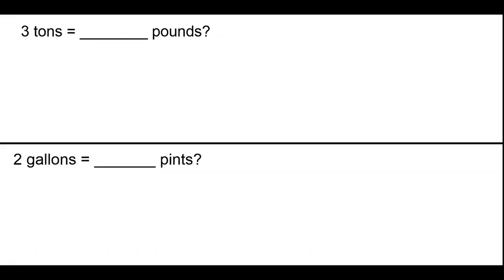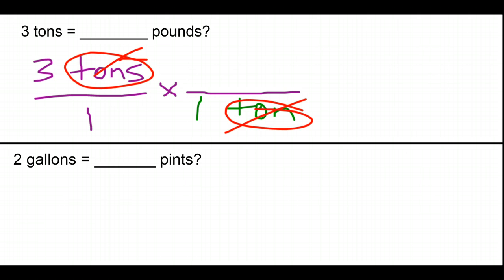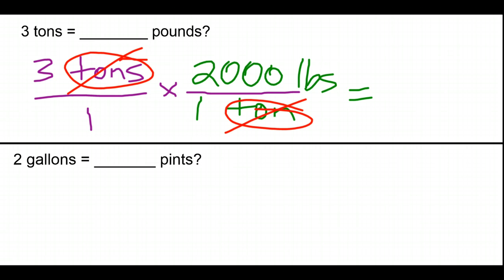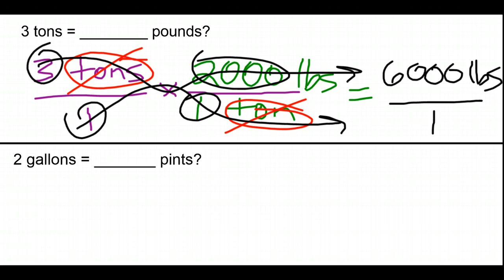We start with what we know: 3 tons. We want pounds, and we know we can compare tons to pounds in a conversion fraction where the numerator and denominator represent the exact same value. 1 ton goes in the denominator so that tons cancel out, and 1 ton equals 2,000 pounds. The tons cancel — a ton in the numerator divided by a ton in the denominator — and now we just multiply across: 3 times 2,000 is 6,000 pounds. 1 times 1 is 1. So 3 tons is the same as 6,000 pounds.